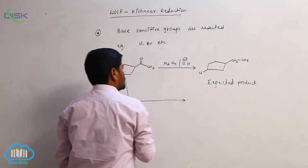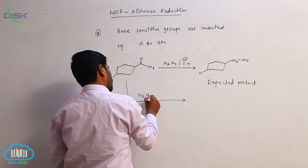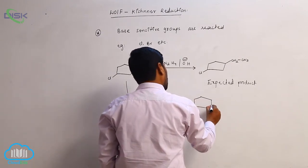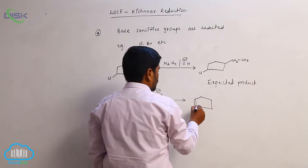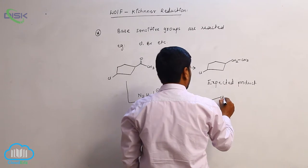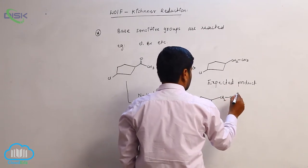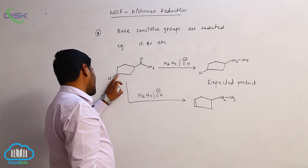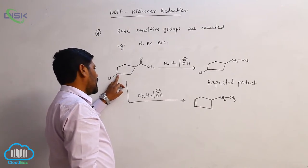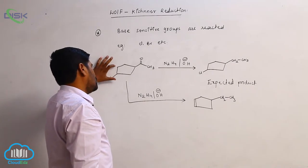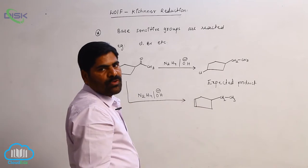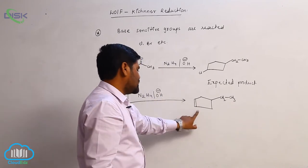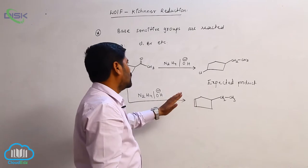However, while using the same hydrazine in the presence of a base, chlorine is also reacted, forming a double bond — giving CH=CH–CH3. The reason is: first, loss of Cl⁻ takes place to form a stable carbocation, then it abstracts a proton from the beta carbon to form a double bond. So in the basic medium, a double bond is formed.